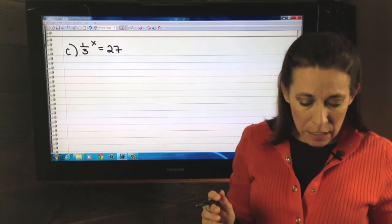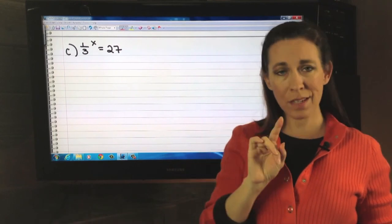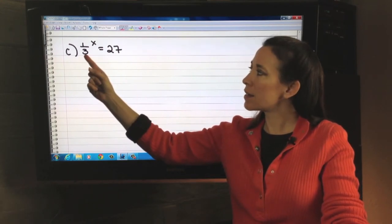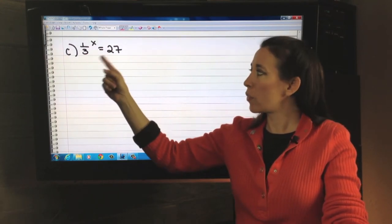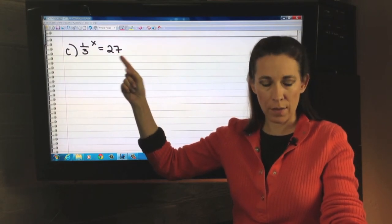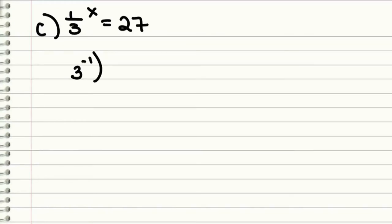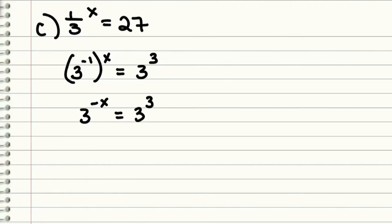In problem C, we want to get x out of the exponent position. We could use a logarithm, but notice: we've got 1 third, which we can write as 3 to the negative 1, and 27, which we can write as 3 cubed. So we can write 1 third to the x as 3 to the negative 1 to the x, and 27 as 3 cubed. That gives us 3 to the negative x equals 3 cubed. If your bases are alike and set equal, then your exponents must be alike. Therefore negative x equals 3, so x equals negative 3.